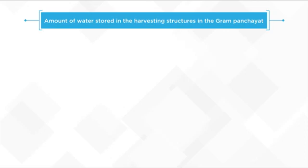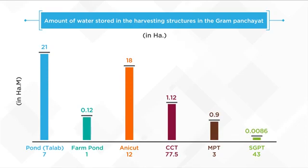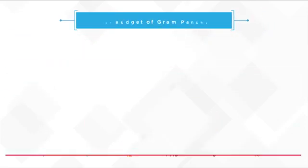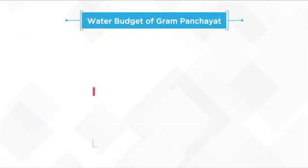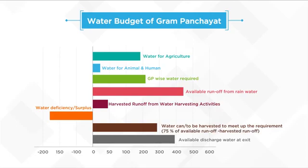Information about existing harvesting structures and their capacity of water storage helps to estimate the water budget and assess the need for additional water harvesting structures to meet the water deficit. The water budget of the Gram Panchayat is then presented, analyzing surface water availability depending upon water requirements for humans, livestock and crops and the volume of runoff. Based on the water budget, the kind and quantity of required harvesting structures can be planned easily.